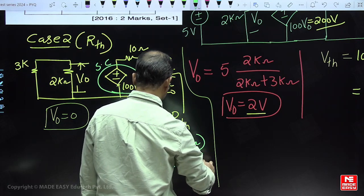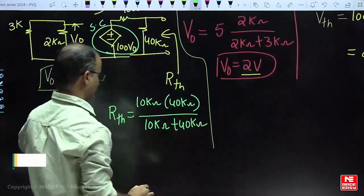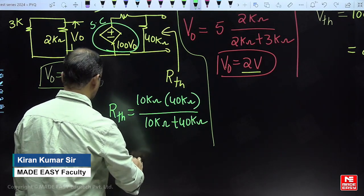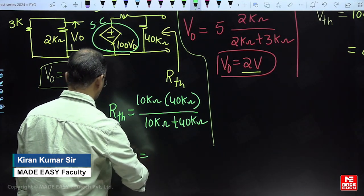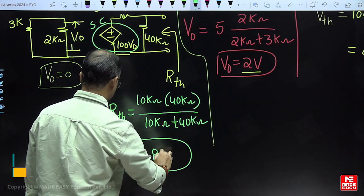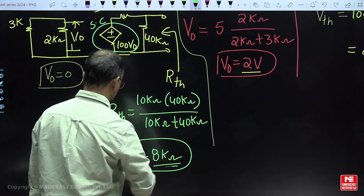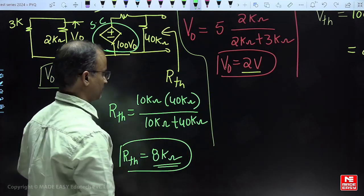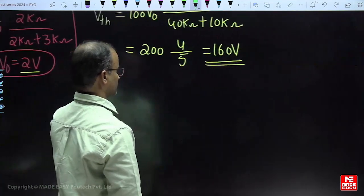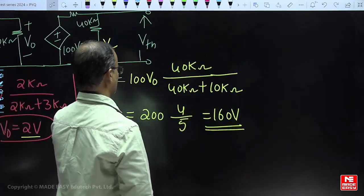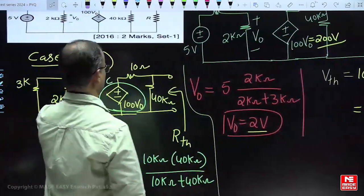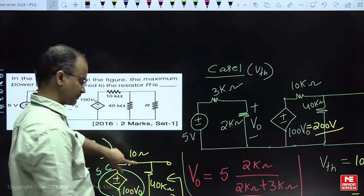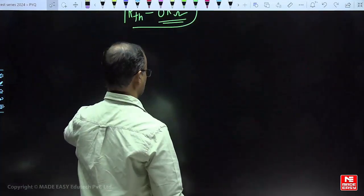Using R1 times R2 divided by R1 plus R2, if you simplify, Rth is equal to 8 kΩ. Now Rth is completed and Vth is also completed. The question asks for the maximum power delivered to the load resistor.